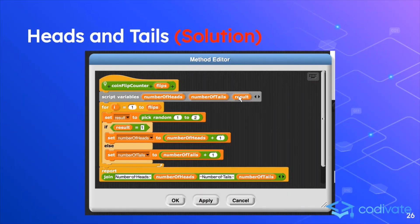This is the solution to the previous exercise. Here we have one parameter called flips. We create script variables: number of heads, number of tails, and result. So a total of three script variables. For i equals 1 to flips, which is in this case the parameter, we set result equal to pick random 1 or 2. So result is either becoming 1 or 2. And if result equals 1, set the number of heads to the number of heads plus 1. Otherwise, set the number of tails to the number of tails plus 1.